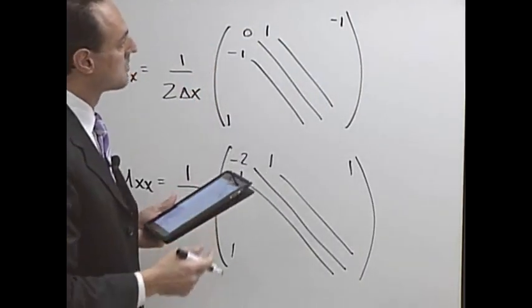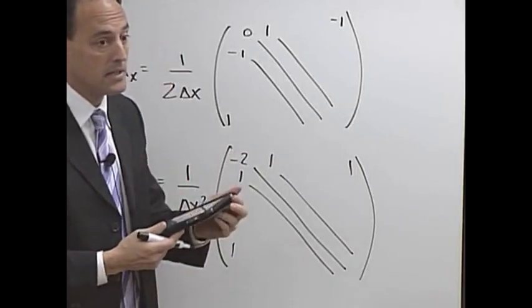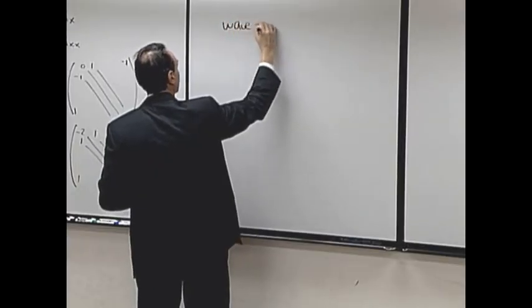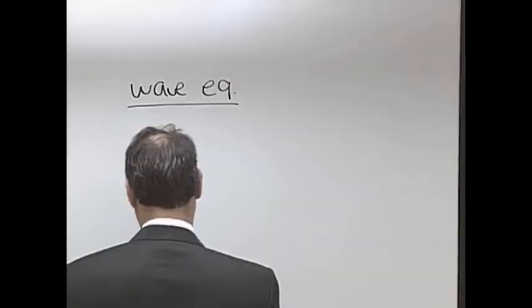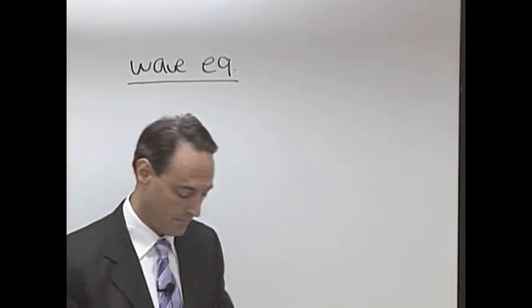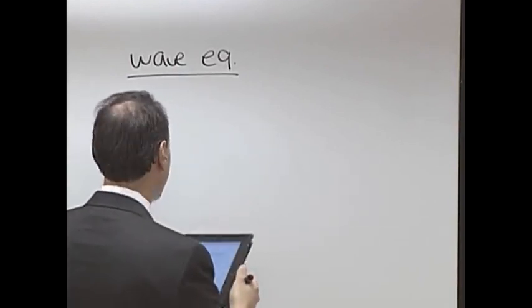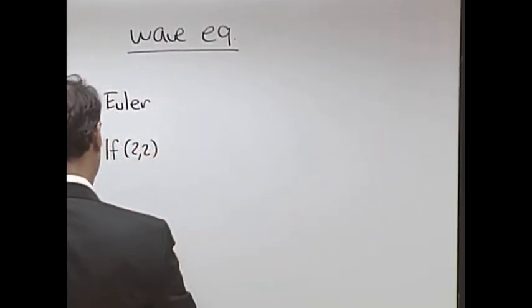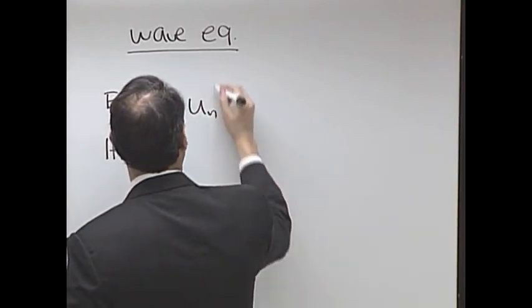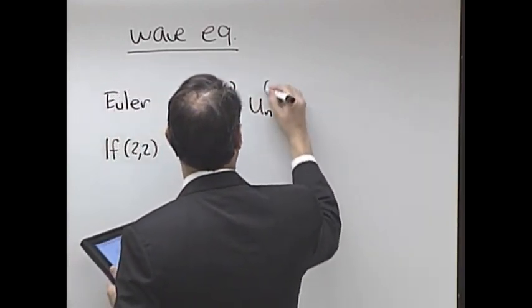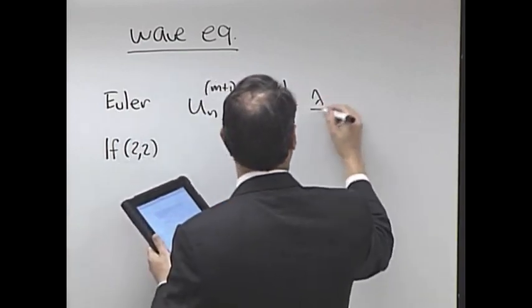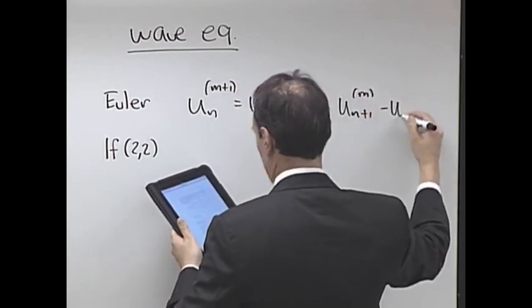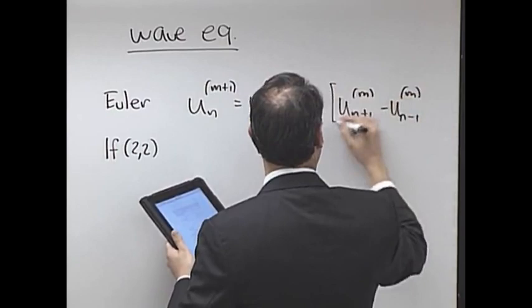Finally, let me write down some schemes that we're going to implement. So for the wave equation, we're going to be looking at LeapFrog and Euler. Those are the two. So if you do the one-way wave equation, LeapFrog 2-2, the one-way wave equation looked like this. The solution in the future is what it was now, plus lambda over 2, u n plus 1, m minus u n minus 1, m.